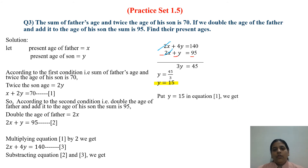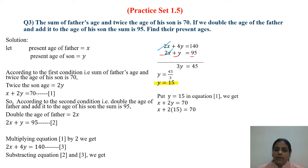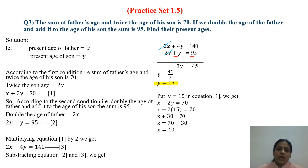Now put Y equals 15 into equation 1: X plus 2Y equals 70. So X plus 2 into 15 equals 70, meaning X plus 30 equals 70. Therefore X equals 70 minus 30, which is 40.